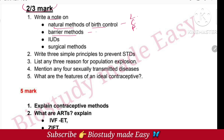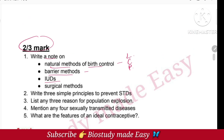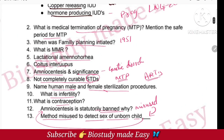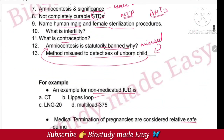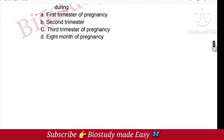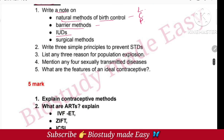Next are barrier methods. Then IUDs — there are three types of IUD. Finally, surgical methods include vasectomy and tubectomy.